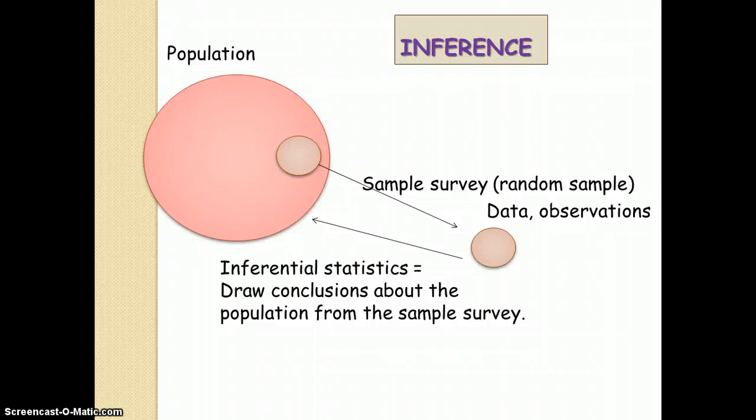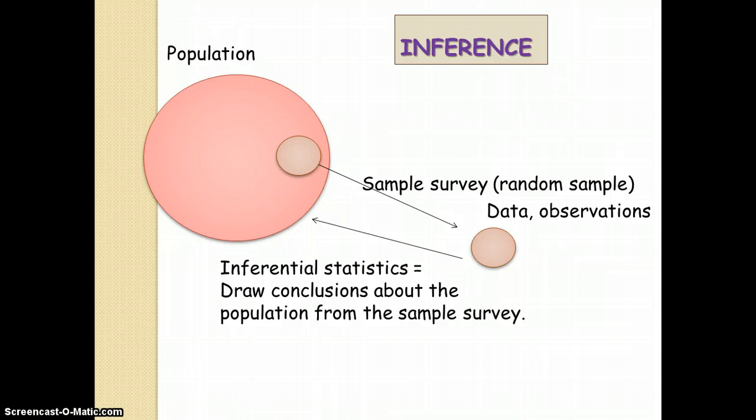Statistical inference is when we generalize information from the sample to the population. The sample is chosen from the population in a random way. We use the sample for analysis.